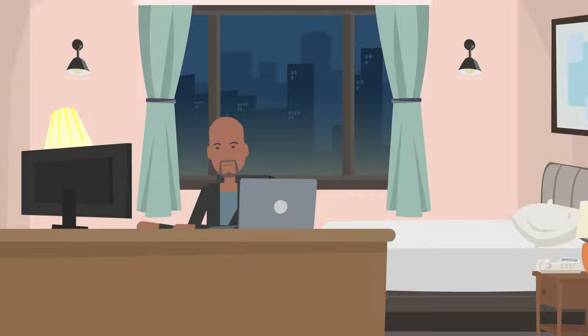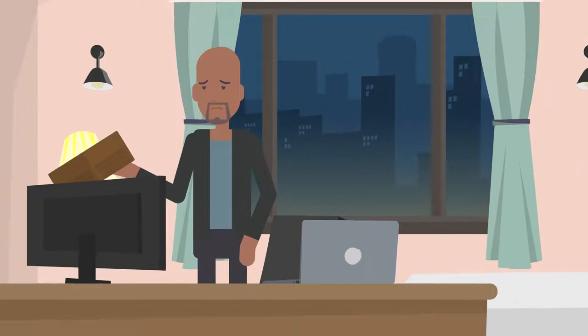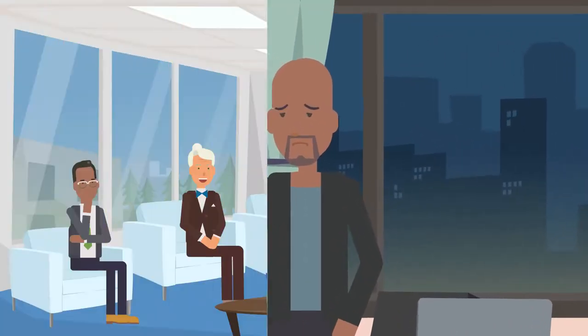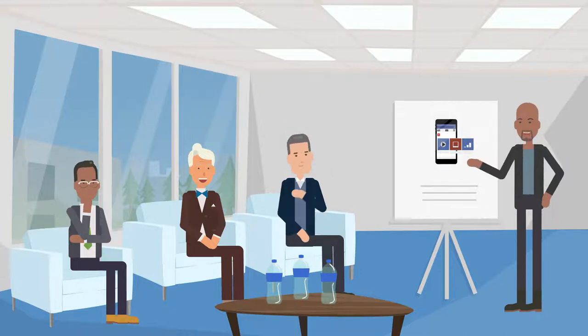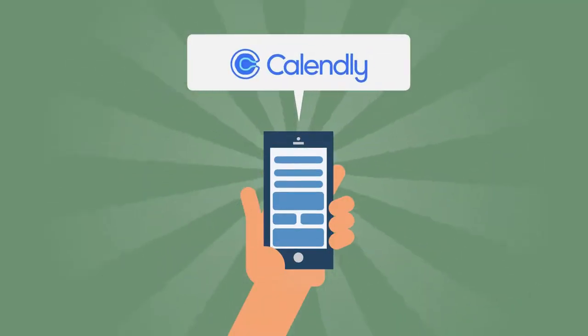A year later, while Awotona finished building the prototype version of Calendly, the company also ran out of money. Fortunately, the prototype was good enough to convince some venture capitalists to invest $550,000 to keep the company afloat. And now, Calendly was officially alive.